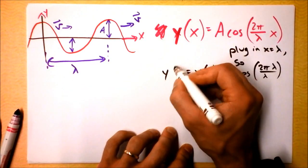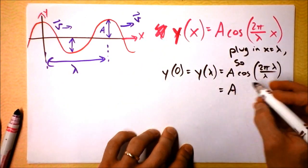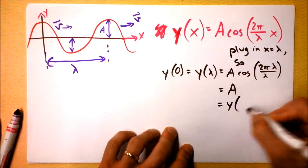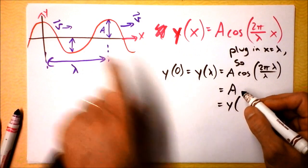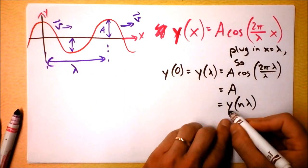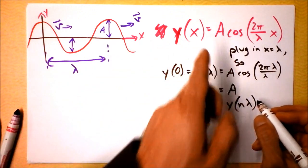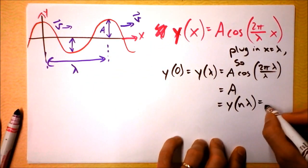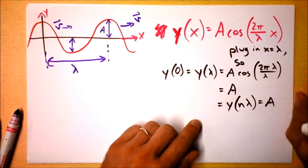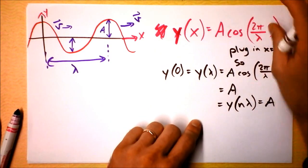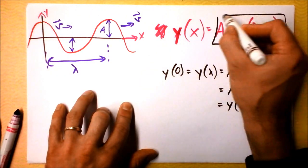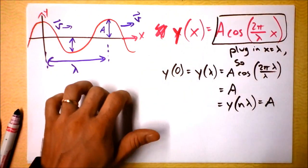And this is also equal to the position at zero, and it's also equal to the position at any number of wavelengths away, so we could even call it n times lambda. Anytime you are a wavelength away, then you will find that the position of the rope is A, it is A up high. All right, that is fine.